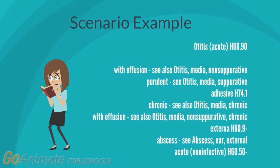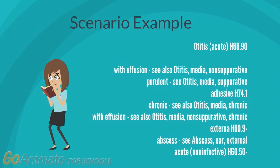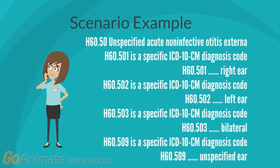So what do we do with our scenario? We first look up our main term in the alphabetical index, which would be otitis. Our subterms would be externa and acute. Here we can see H60.50. Going to the tabular and looking at the code we found, which was H60.50, you can see we have a lot of choices based on the laterality of the ear.